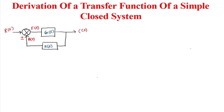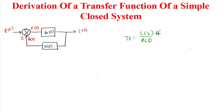Hello everyone, welcome to the Control System Engineering playlist. In this video we discuss the derivation of the transfer function of a simple closed loop system. We know that the transfer function is the ratio of the Laplace transform of output to the Laplace transform of input. Ultimately, we have to find C(s) / R(s).